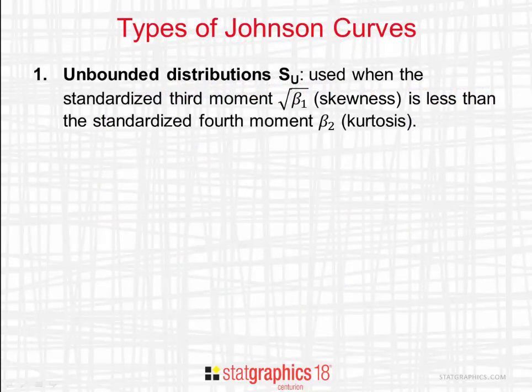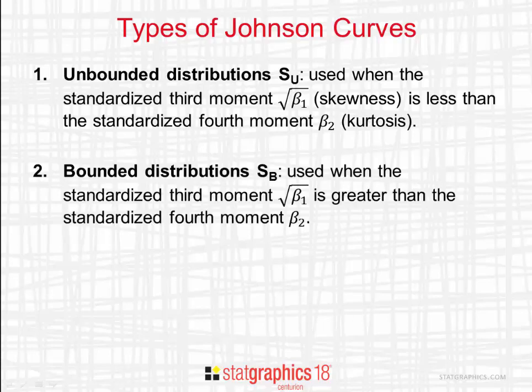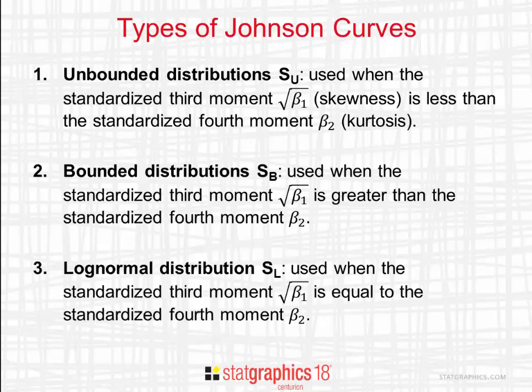One approach for estimating process capability when the data come from a non-normal distribution is to fit a Johnson curve. There are three kinds of Johnson curves: unbounded distributions, which are used when the standardized third moment — related to skewness — is less than the standardized fourth moment, which is related to kurtosis; bounded distributions, which are used when the standardized third moment is greater than the standardized fourth moment; and finally, the log-normal distribution, which is used when the 3rd and 4th moments are equal.